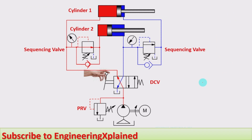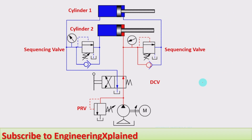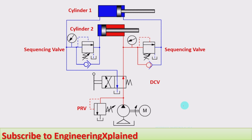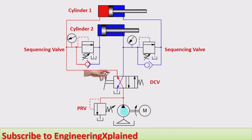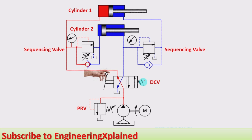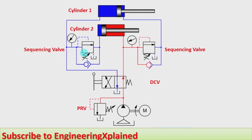This is the animation circuit for the sequencing of cylinders. First we'll identify what it contains and later how it works. It consists of a tank, filter, hydraulic pump run by a motor, a pressure relief valve, and a 4/2 direction control valve that is manually actuated with spring return.